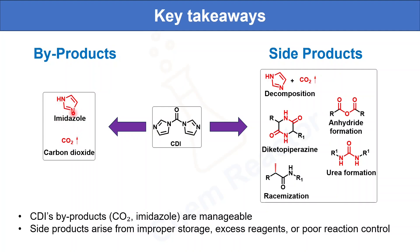Key takeaways: CDI forms two common byproducts, imidazole and carbon dioxide. As side products, it can decompose under moist conditions, and can lead to intramolecular cyclizations, racemization, as well as anhydride and urea formation. These are the commonly formed side products in CDI coupling reactions, though more can arise depending on the starting materials used. CDI byproducts like CO2 and imidazole are manageable — CO2 is a gas that escapes during the reaction, and imidazole can be washed out easily in aqueous workup. Side products arise from improper storage of CDI, excess use of reagents, or poor reaction control. We can avoid these by using proper reagent equivalents and proper storage of CDI.